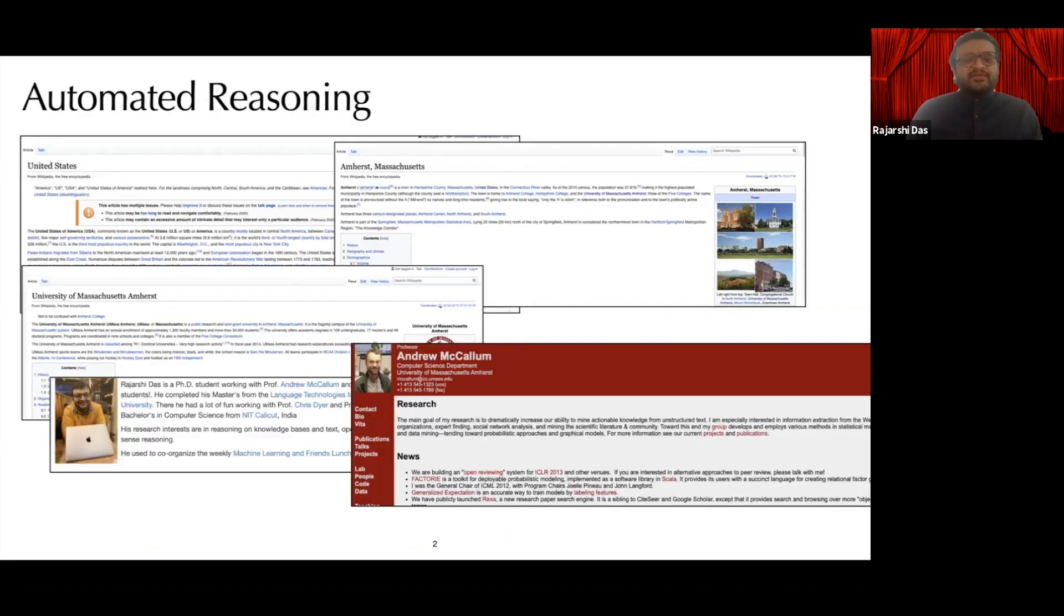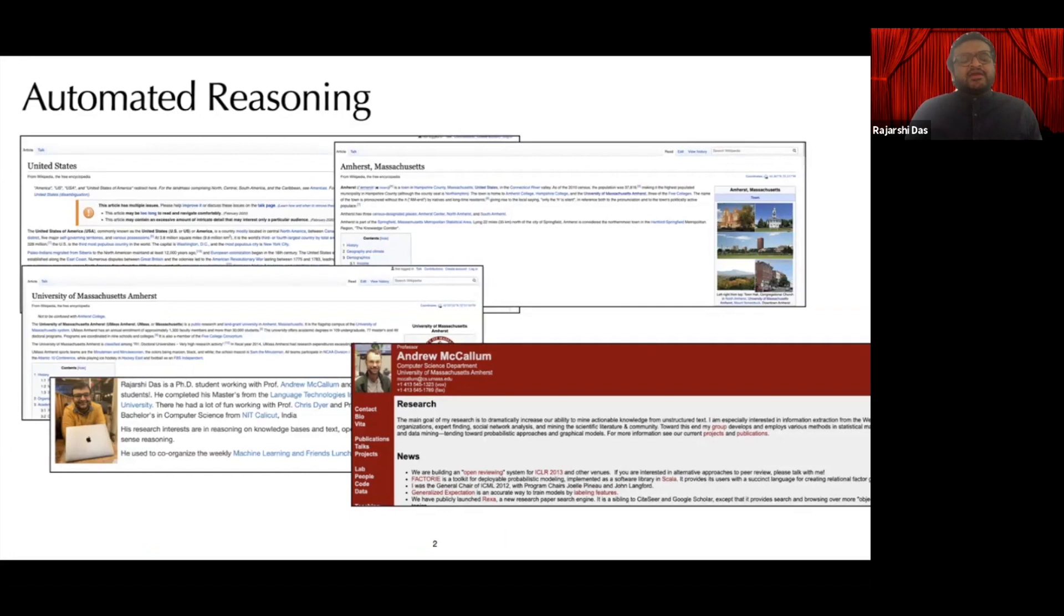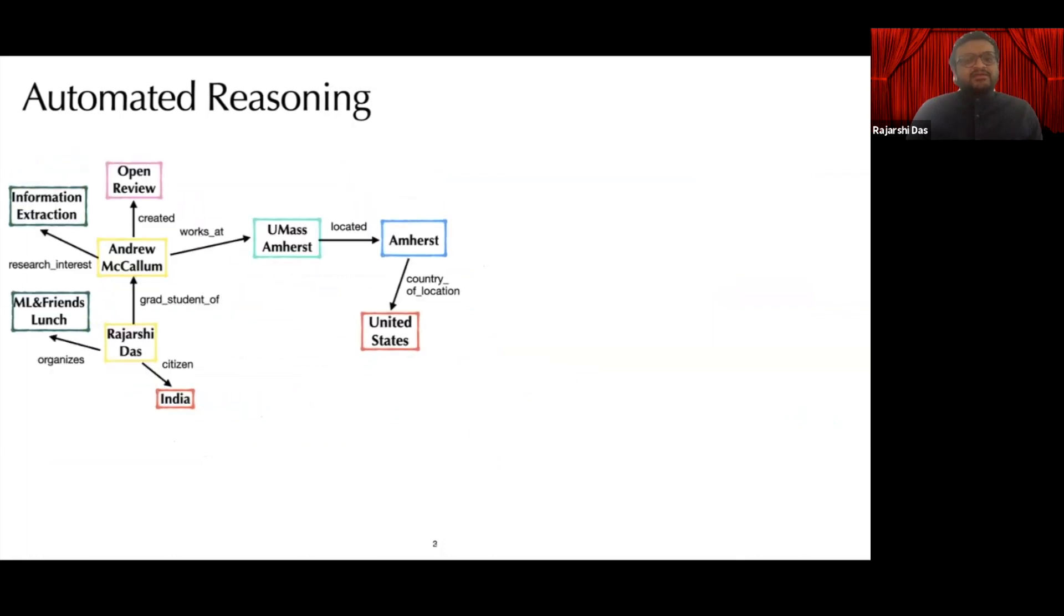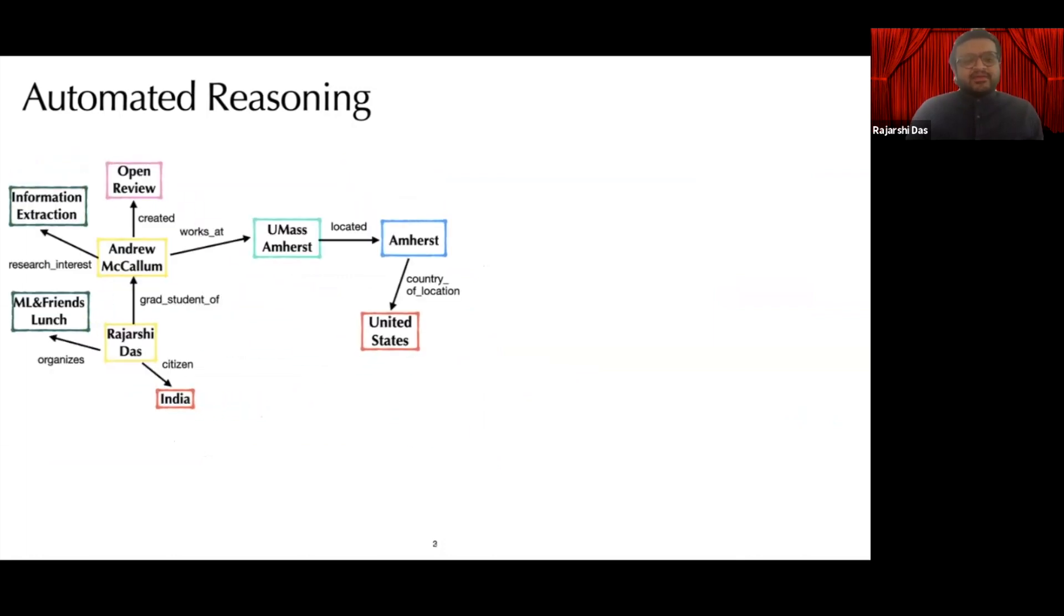The first step in creating a knowledge base is to gather a lot of text and identify the entities present in them, followed by connecting them with semantic relations. This figure represents a toy knowledge graph in which the entities are nodes in the graph represented in colorful rectangles and the relations are represented as labeled edges.